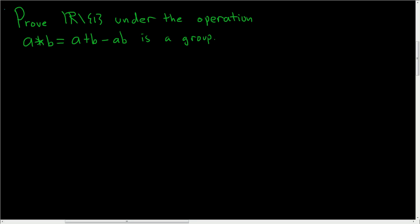In this video, we're going to prove that this set — the set of all real numbers except one — with this binary operation forms a group.